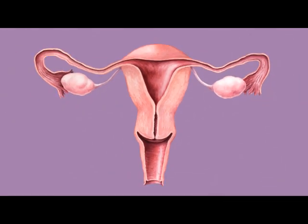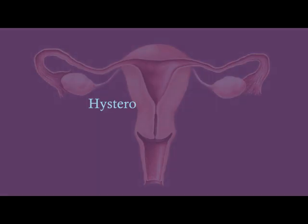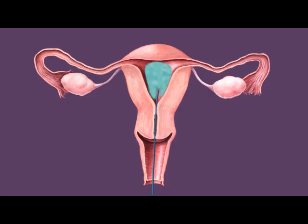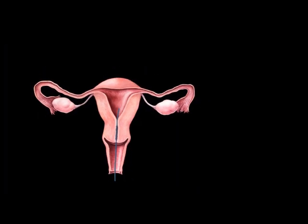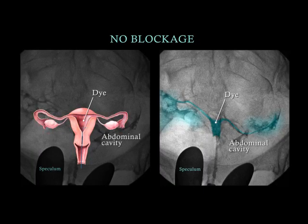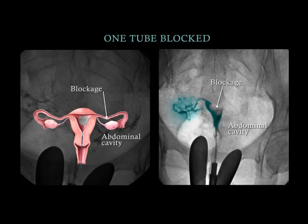A non-surgical outpatient procedure called hysterosalpingography can be used to check for a blockage in the fallopian tubes. A catheter is placed through the vagina and into the endometrial cavity. Next, a dye visible under x-ray is injected into the endometrial cavity. If there is no blockage, the x-ray should show the dye flowing out of both fallopian tubes and into the surrounding space, the abdominal cavity. If one fallopian tube is blocked, the dye will not spill out into the abdominal cavity on that side of the patient.